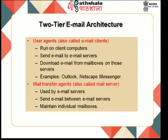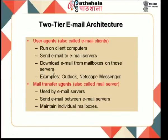In the two-tier email architecture, there are two components: user agents and mail transfer agents. User agents are also called email clients; they run on client computers and send email to email servers, from which they can also download email. Examples include Outlook and Netscape Messenger. Mail transfer agents (mail servers) send email between servers, and also maintain individual mailboxes for incoming messages and an outgoing message queue for each user.